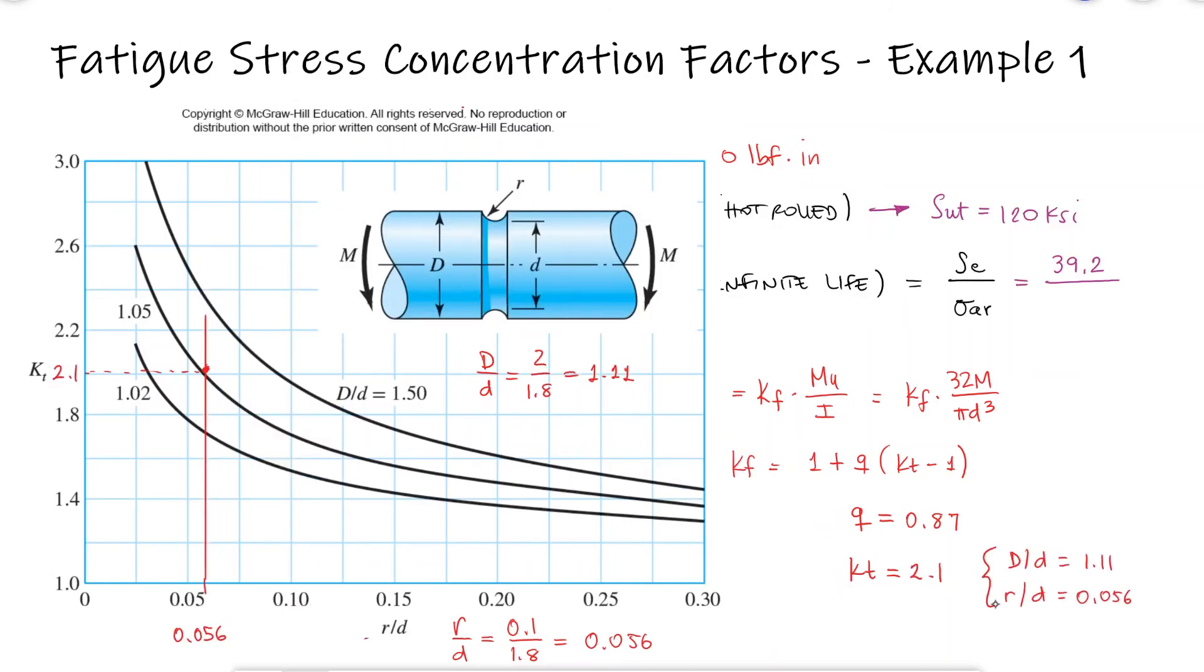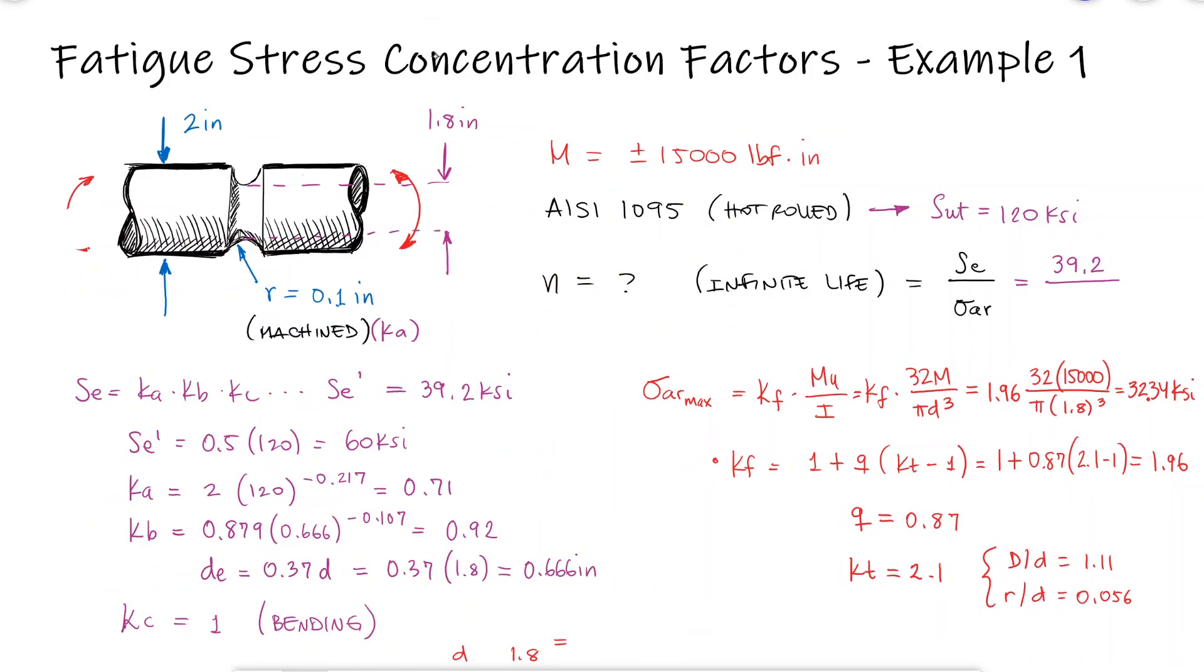The fatigue stress concentration factor is therefore 1.96 and the alternating stress 32.34 Ksi. And notice that the stress is calculated with the smaller diameter of 1.8 inches, since that maximum stress will occur at the notch. The factor of safety is therefore 1.21.